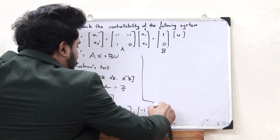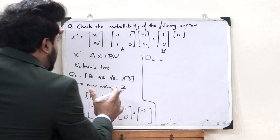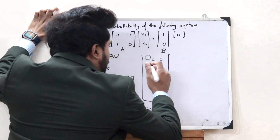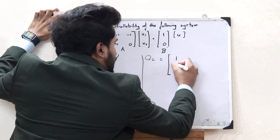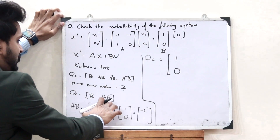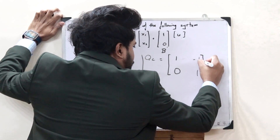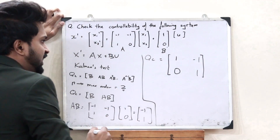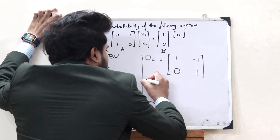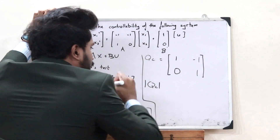We can now formulate QC, which is given as [B | AB]. So we take B = [1, 0] and AB = [-1, 1], giving us the matrix QC = [[1, -1], [0, 1]]. The next step is to find the determinant of this matrix QC. The determinant of QC = (1)(1) − (−1)(0) = 1.